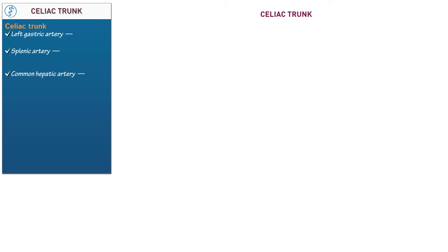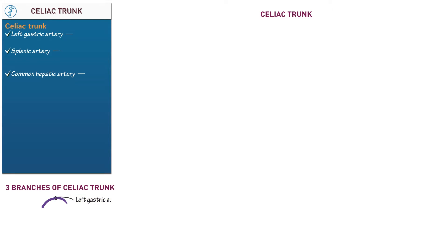Let's draw a simplified diagram of these three primary branches of the celiac trunk. Work clockwise to show that the left gastric artery, which travels to the stomach, extends superiorly and towards the left. The splenic artery, which travels to the spleen, extends slightly inferiorly and then towards the left. Notice that as it does so, it twists upon itself.